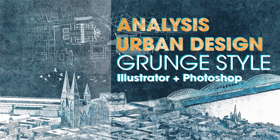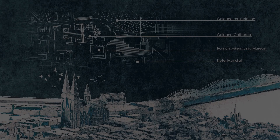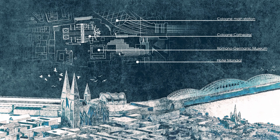Hey guys, this is Archibig. In this tutorial I'm gonna show you how you can create this cool grunge style urban design plan by using Illustrator and Photoshop. You can use it for any kind of urban analysis in your next architecture project. Subscribe if you want to support the channel and to see more videos in the future.